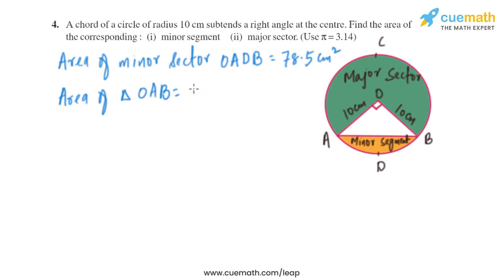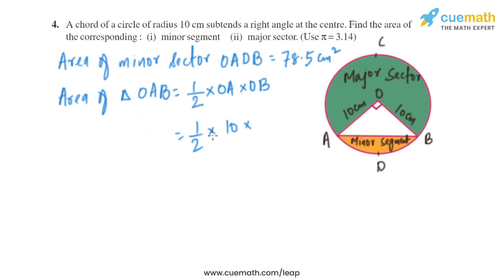The formula for the area of a triangle is half times base times height. Here, the base is OA and the height is OB, so it is half times 10 times 10. On solving, the area of triangle OAB is 50 square centimeters.